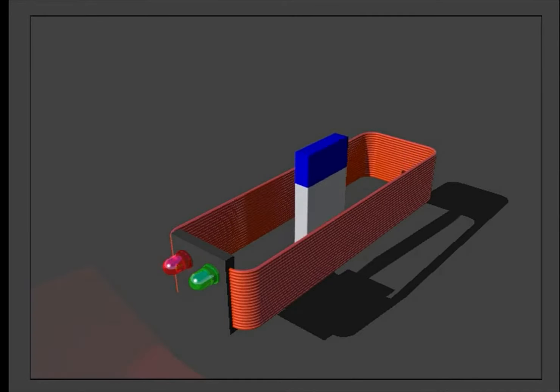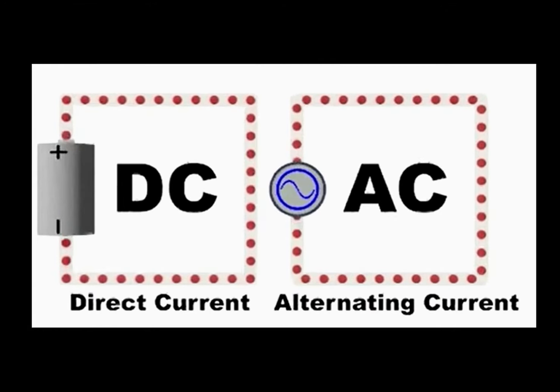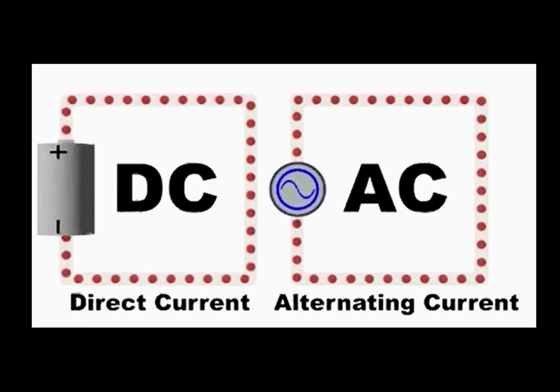Now, why are the conductors or these wires always coiled around? Because coiling increases the field strength. You might also know the difference between AC and DC. In DC, the current does not oscillate, while in AC, it does.